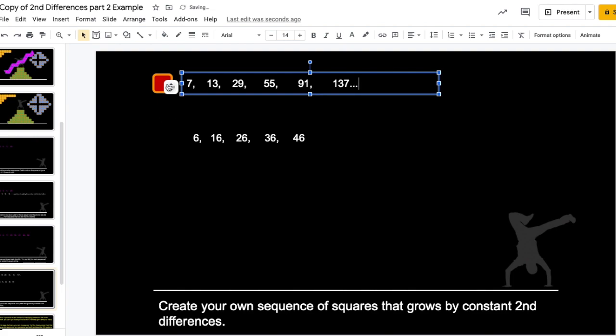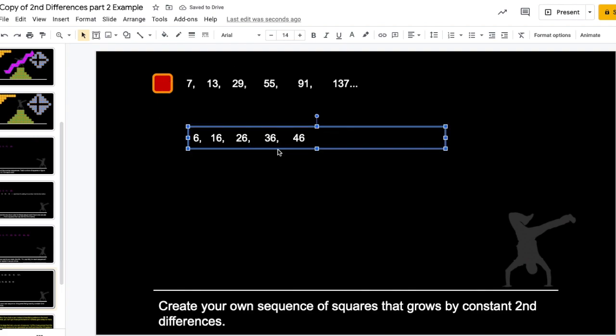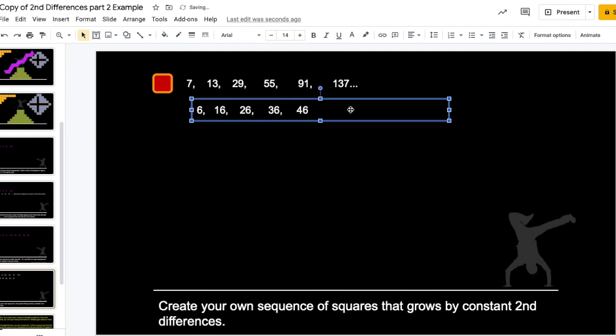Alright. That's a second difference sequence. How do I know it's a second difference sequence? Because each time I'm adding 10 more than I did the time before. Right? Now, that's it. That's all you have to do to get full credit on second differences part 2.